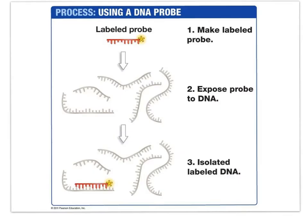In this image, you can see the use of a probe, sometimes called a primer. Scientists often know something about the gene that interests them. They know short base sequences, and they use this knowledge to construct the radioactively labeled probe. In certain circumstances, the probes are known as primers. The probes are then mixed with the entire genome that's been cut into fragments, and the radioactive fragment seen here is the gene of interest, and this can be isolated.